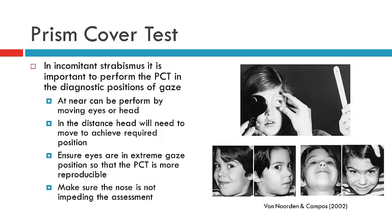In the previous video we discussed how the deviation in incomitant strabismus changes dependent on which eye is fixing and dependent on position of gaze. So it's now important to transfer the skills you learnt about how to perform the PCT to incomitant strabismus, so that we can now perform a PCT in the diagnostic positions of gaze.